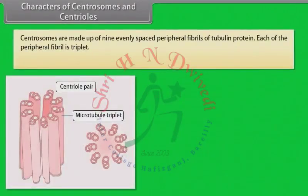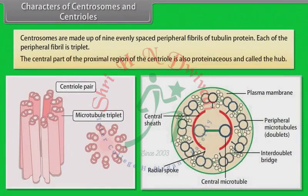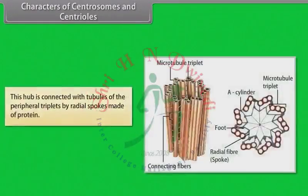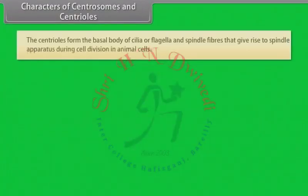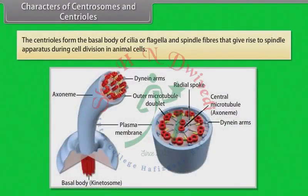Centrioles are made up of nine evenly spaced peripheral fibrils of tubulin protein. Each peripheral fibril is a triplet. The central part of the proximal region of the centriole is proteinaceous and called the hub, which is connected with tubules of the peripheral triplet by radial spokes made of protein. The centrioles form the basal body of cilia or flagella and spindle fibers that give rise to the spindle apparatus during cell division in animal cells.